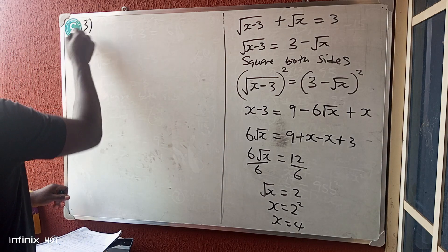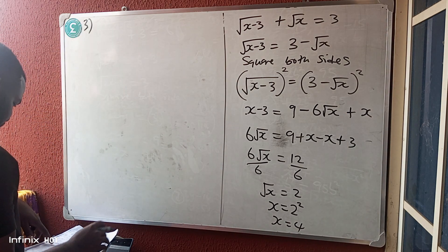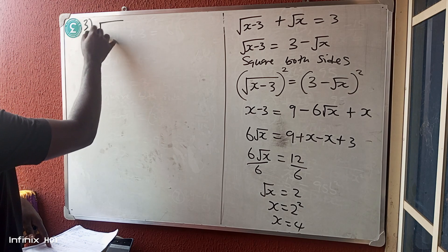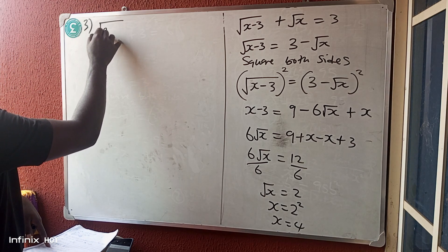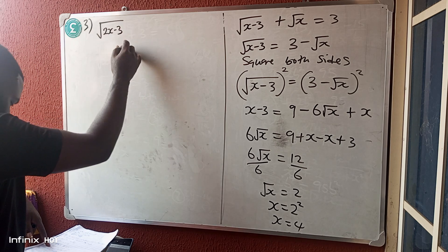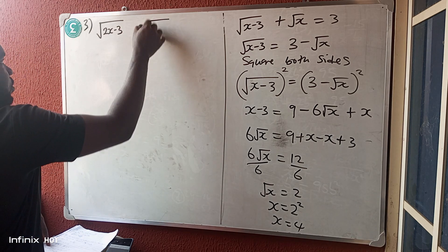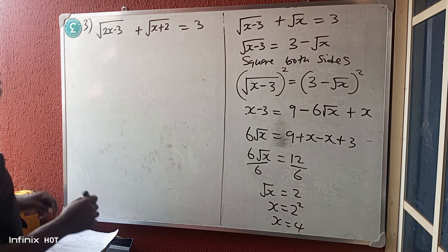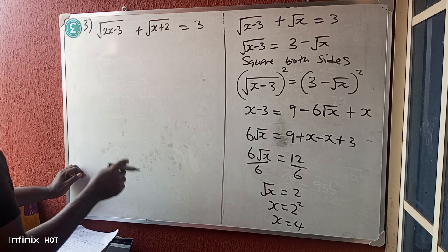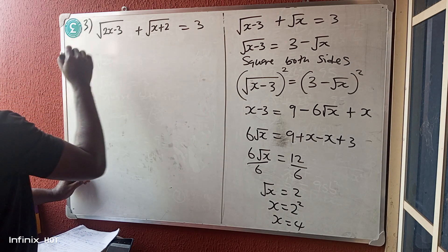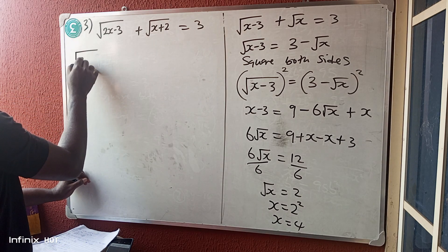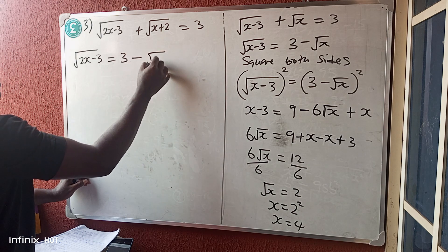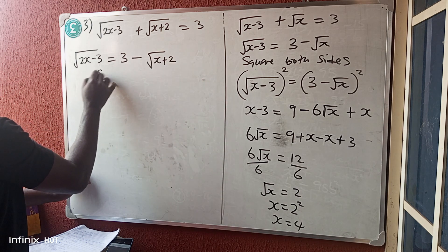Number three: root(2x - 3) + root(x + 2) = 3. Since two square roots can't be on the same side when squaring, we move one over: root(2x - 3) = 3 - root(x + 2). Now square both sides.